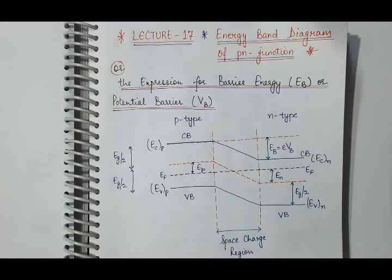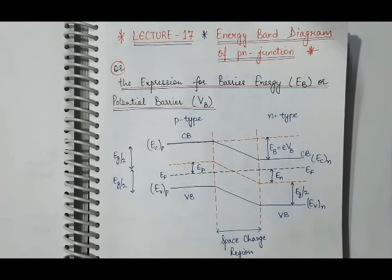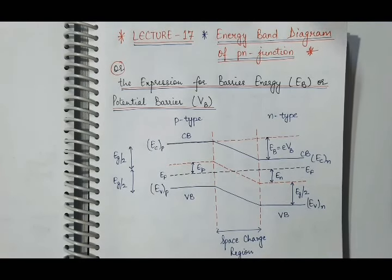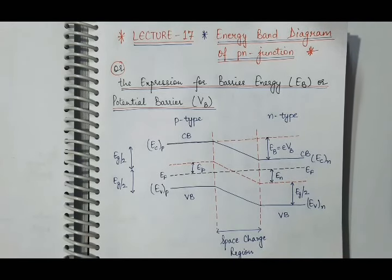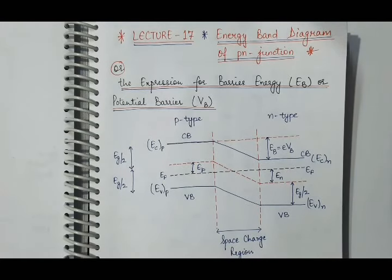Good morning students. In this lecture 17, we will discuss the energy band diagram of the P-N junction and derive the expression of barrier energy Eb, or the expression for potential barrier Vb in this energy band diagram of P-N junction. First of all, we will draw the energy band diagram of the P-N junction.